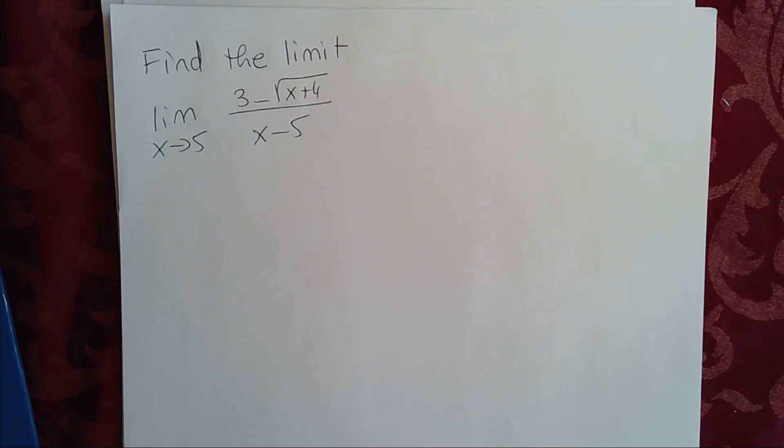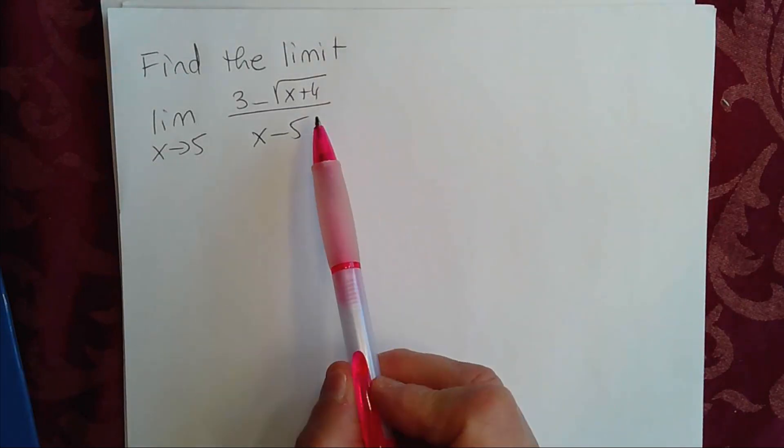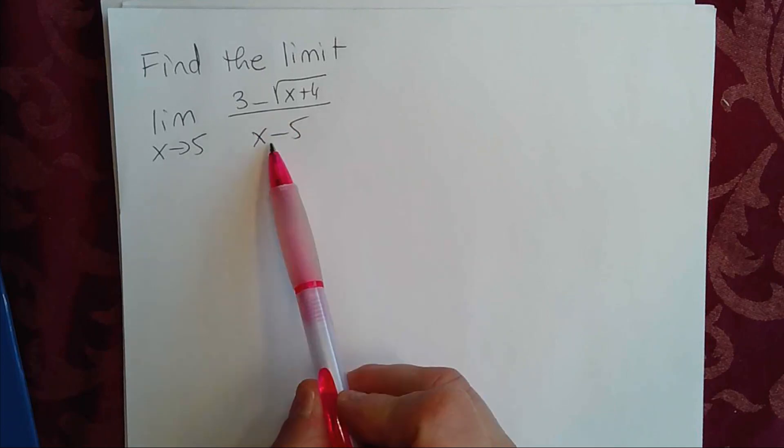Hello, everybody. Today, we're going to find the limit of 3 minus the square root of x plus 4 divided by x minus 5 as x approaches 5.